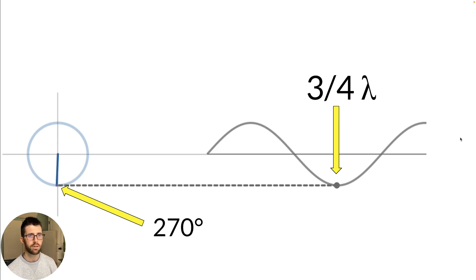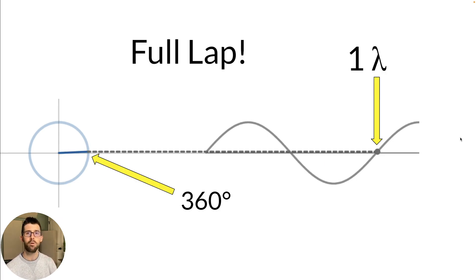And we move on to 270 or the same thing as three quarters of the way through its cycle or three quarters of its wavelength. So one full wavelength will be equivalent to doing a full lap or moving 360 degrees through the phase cycle. So that's a little bit on phase.